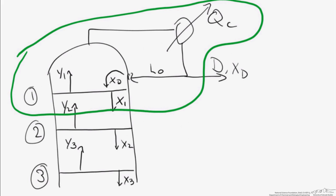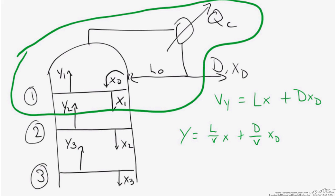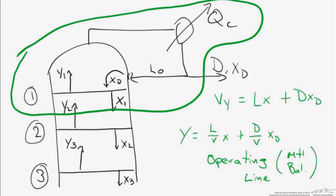Let's look at one of these material balances that we would use to set up our operating line for the top part of the column. The material balances are what derive that operating line. So if we're looking at the top part of the column, we use an operating line based on the component balances between stages. If we write a component balance in terms of the more volatile component, we end up with this general equation. By rearranging terms, we can take this into a y equals mx plus b type linear representation, and this is the equation we use for the operating line at the top part of the column.